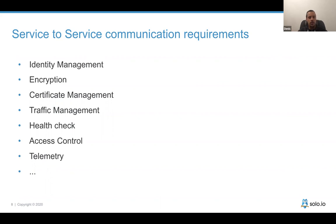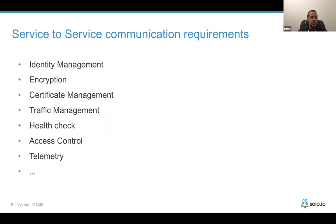With an API gateway you can do much more: you can deploy it in Kubernetes and route requests to services still running on VMs, or send requests to Lambda functions in AWS. That covers securing the edge. But the next step is how to enhance service-to-service communication — for example, how to encrypt communication between microservices.